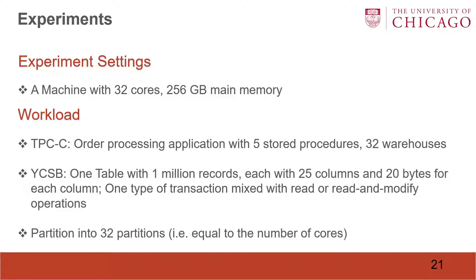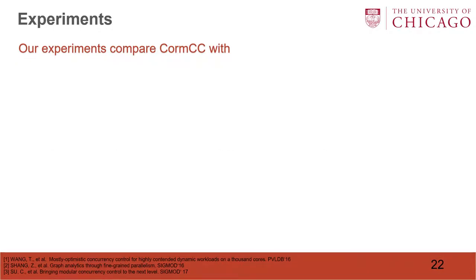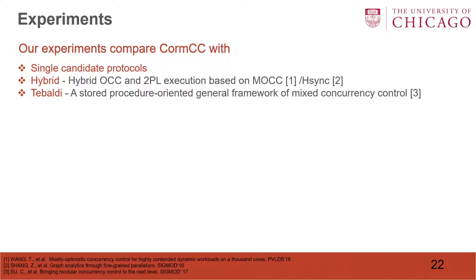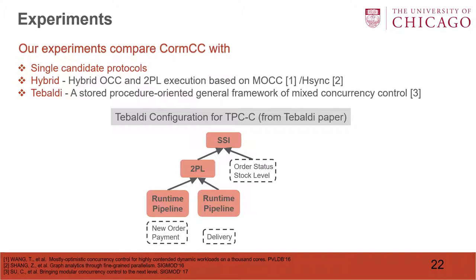We perform experiments on a machine with 32 cores and 256 GB memory. We use two workloads: TPCC and YCSB. We generate 32 warehouses for TPCC and one table with 1 million records for YCSB. We partition each workload into 32 partitions. Our experiments compare COMCC with single-candidate protocols, a hybrid approach of OCC and two-phase locking, and Tabeldi, a stored procedure-oriented general framework of mixed concurrency control. We use the Tabeldi configuration for TPCC from the original paper, which is reported to have the best performance.